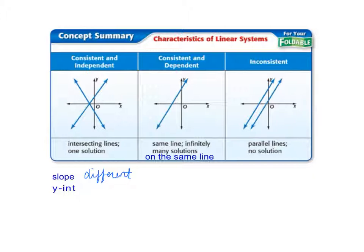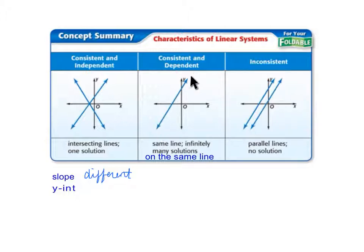On the next one, where you have consistent and dependent: consistent means there's a solution, but dependent means you have the situation where you have a single line — in other words they're both the same line. So where do they intersect? Well, they intersect everywhere along the line, so there are infinitely many solutions. This is of course the same line, so they have the same slope and the same y-intercept.